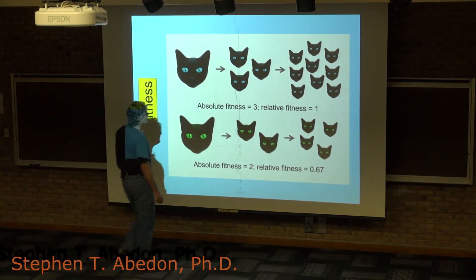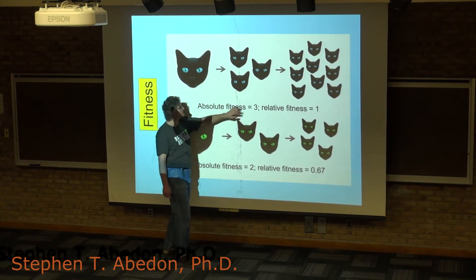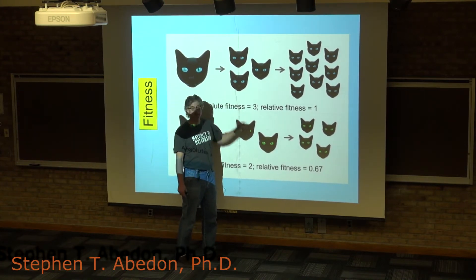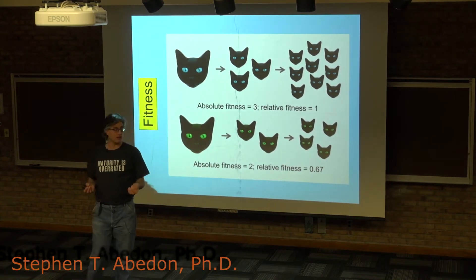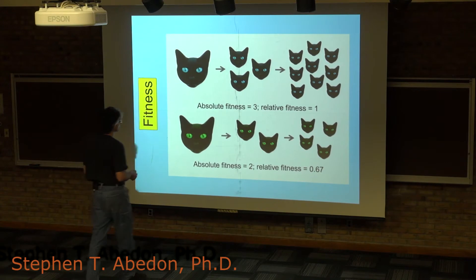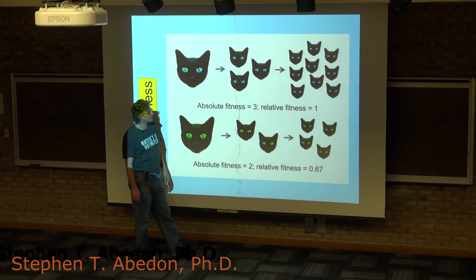So we would describe the fitness, and in fact the absolute fitness, of these individuals here as being three, which simply means that each individual in the population gives rise to three offspring. Whereas these would have an absolute fitness of two.